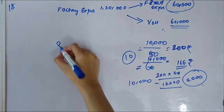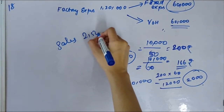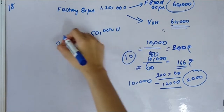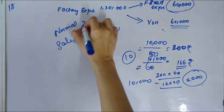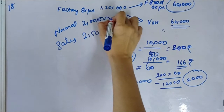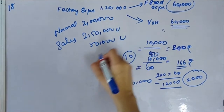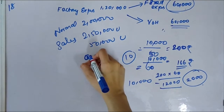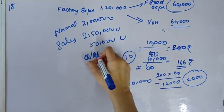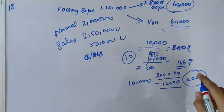Applying this logic: actual production and sales are 2,50,000 units while normal output is 2 lakh units, so 50,000 extra units were produced. This results in over-absorption. Over-absorption is added in the costing P&L account.